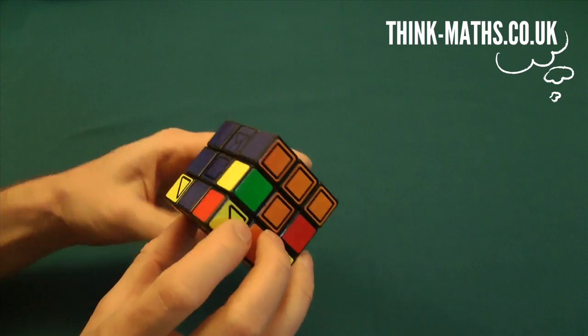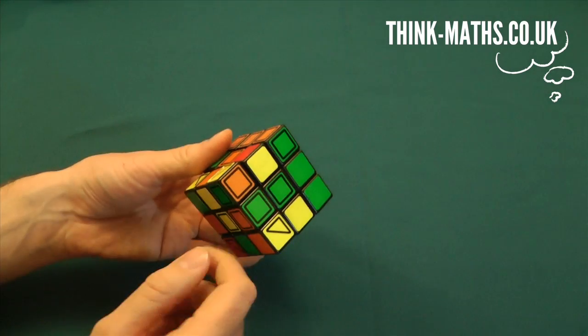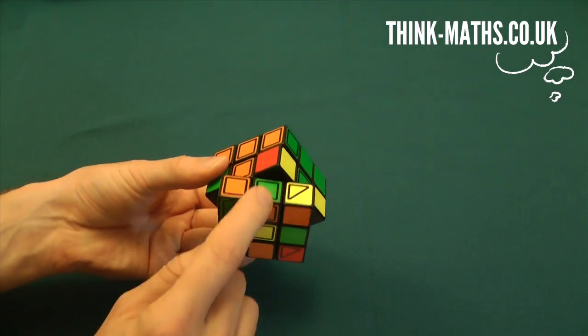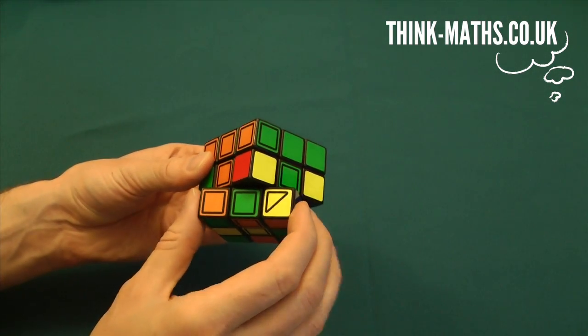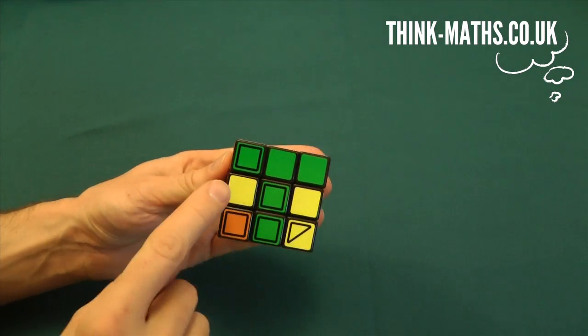So let's try the next one. Let's do green and orange. So there's the green and orange edge. We want to go up there. It lines up this way. And then we position it so where it ends up is on the left.